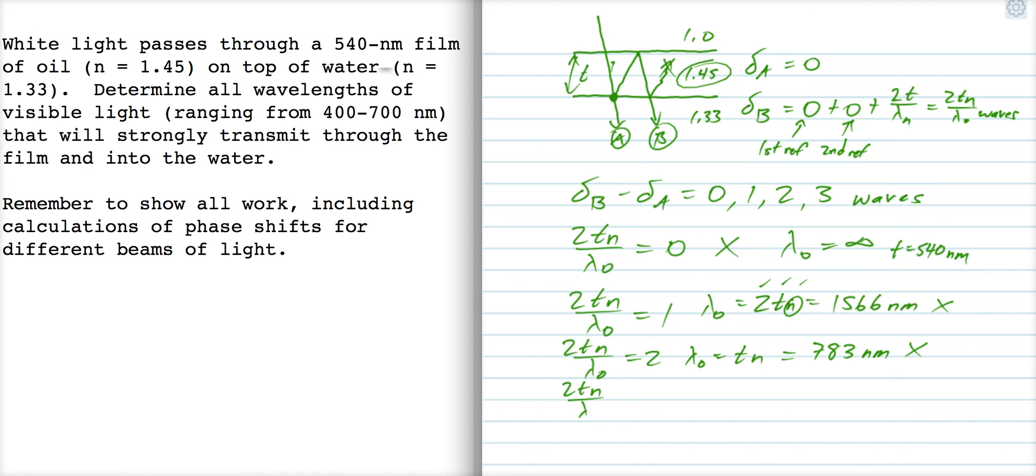Let's try 2T over lambda naught equals 3. That gives us lambda naught is equal to 2T over 3, which is 522 nanometers. That's a good one. That's in the range of visible light, so we can use that as one of our answers.